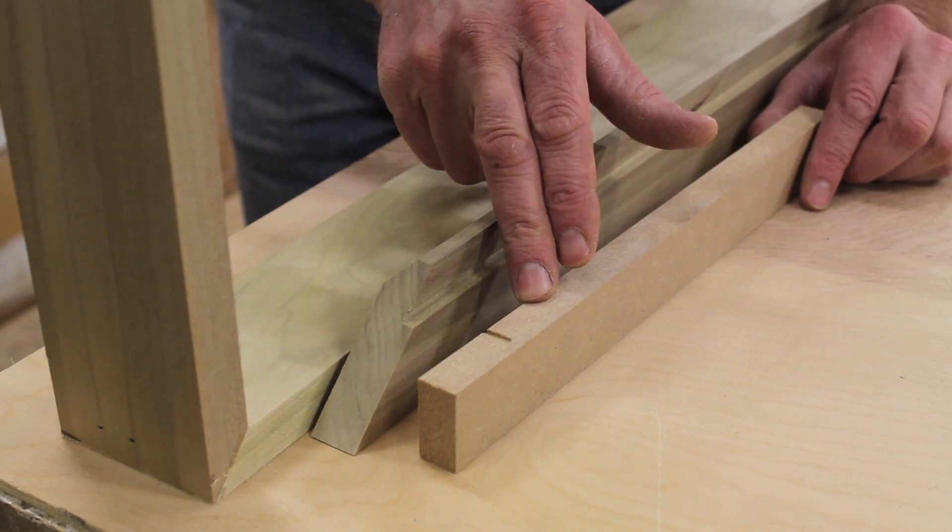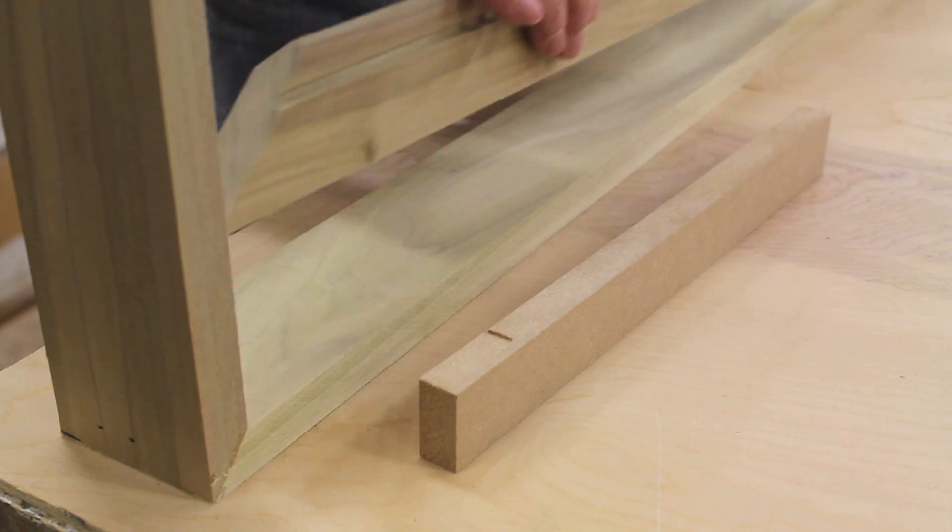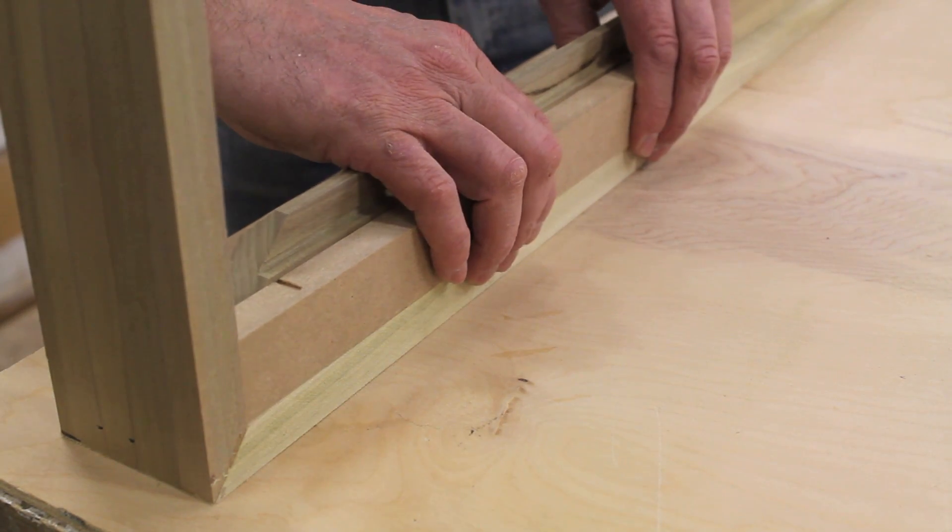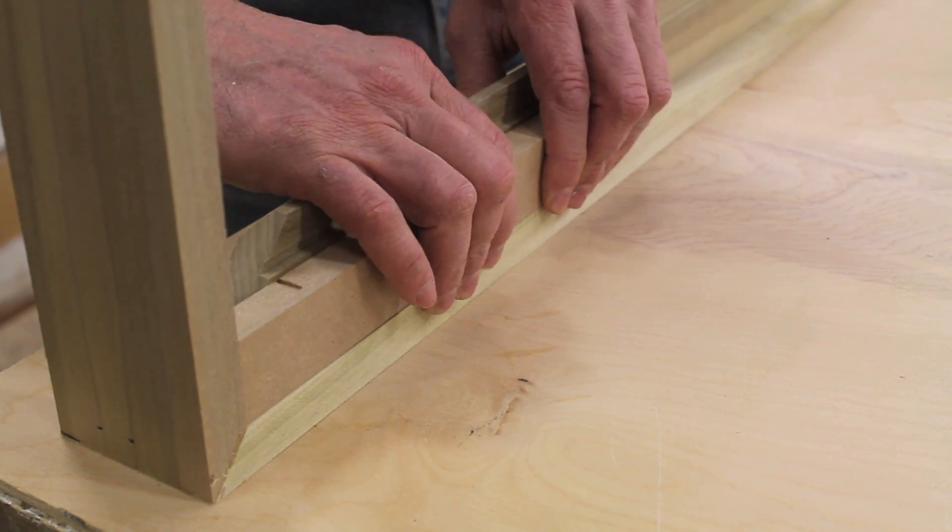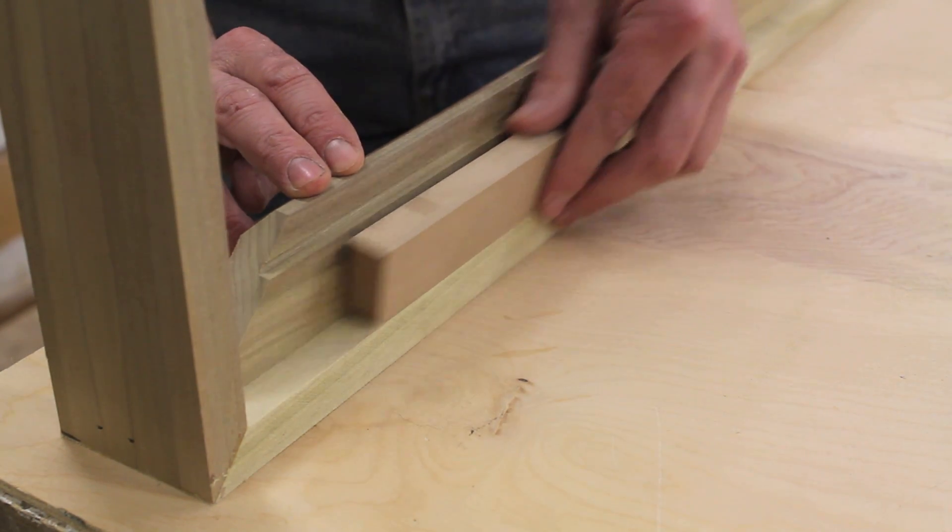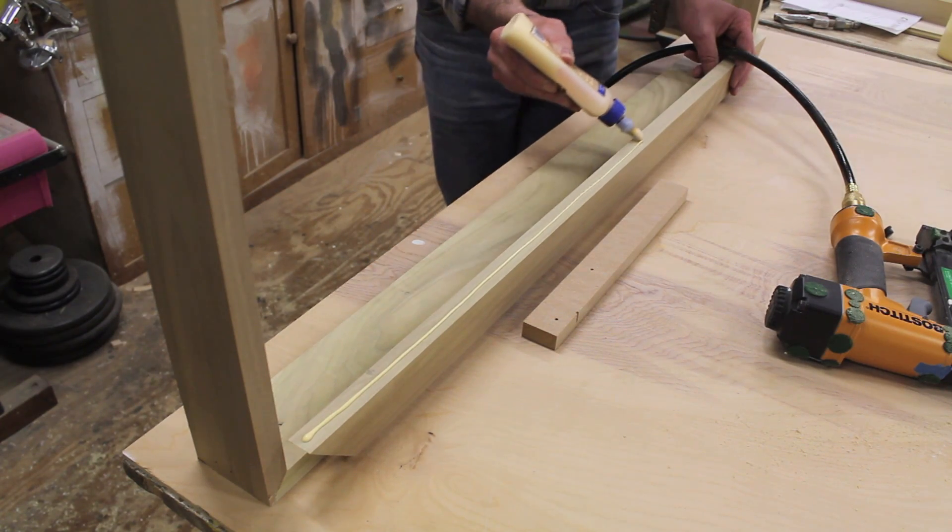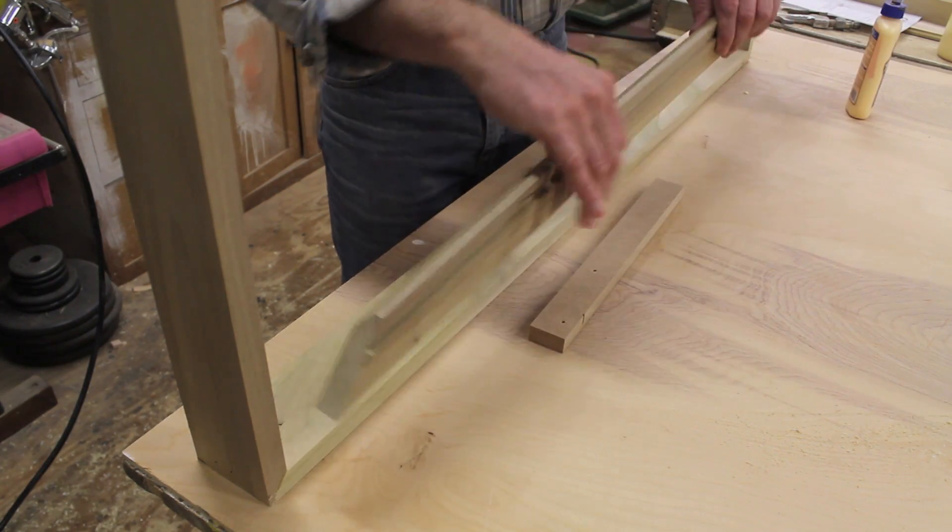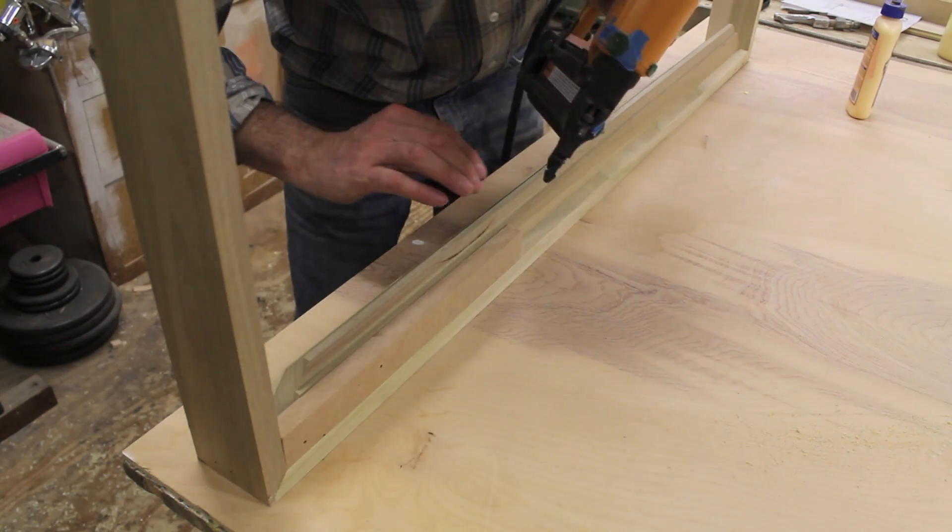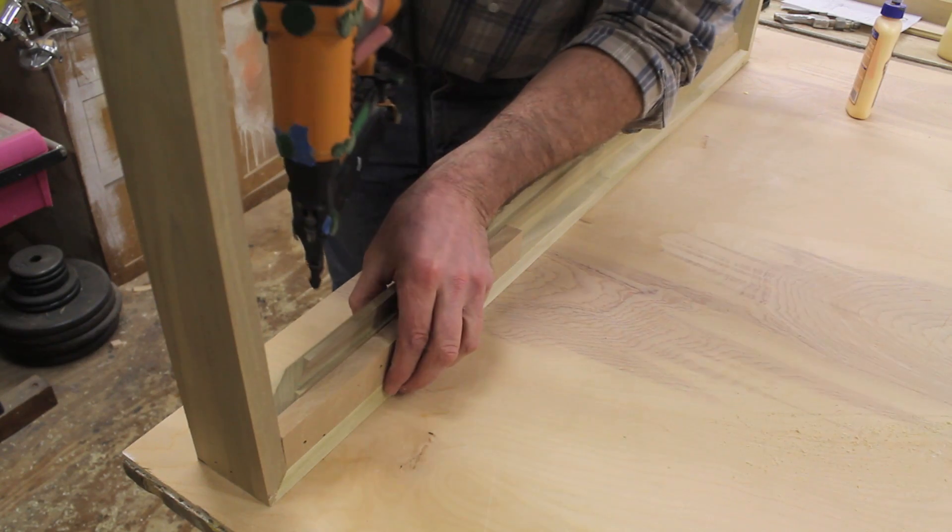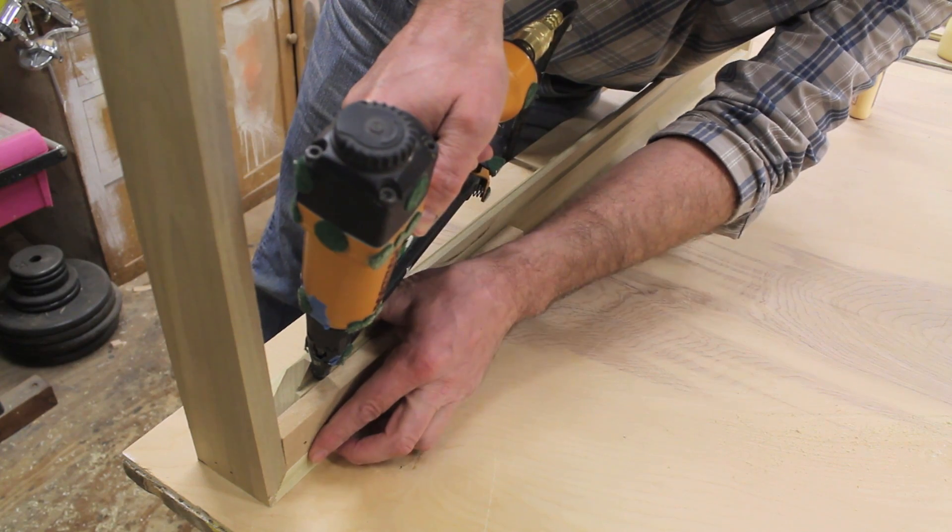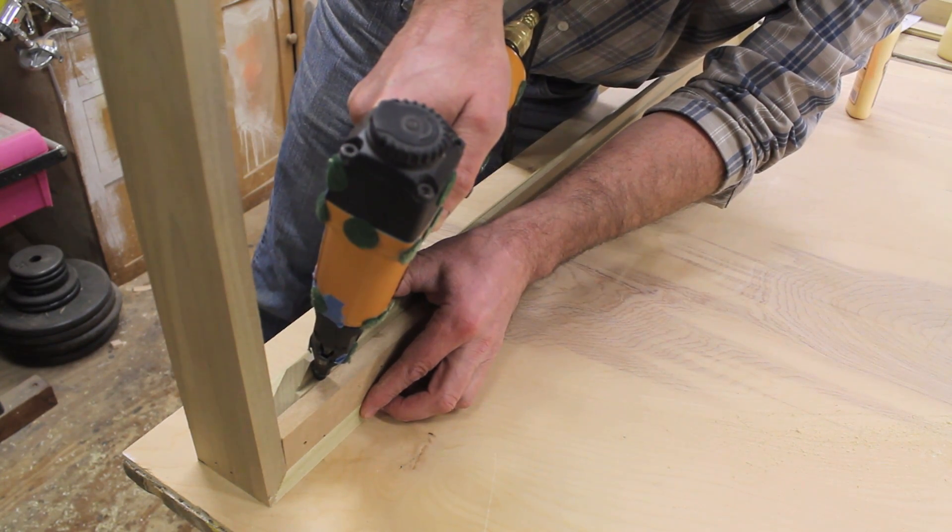I've ripped a piece of MDF at 5/8 of an inch and I'm going to use that as a spacer to help me set the molding in the right place. So if the MDF is flush with the back of the frame as I nail the molding to the frame, it will be in the right place, and I'll use this to work my way around the frame. I've got a two inch nail in my nail gun and I'm trying to sneak a nail right at that rabbet but hopefully not blowing out the other side.